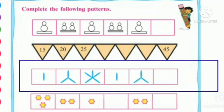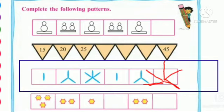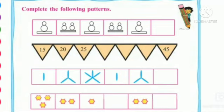In the third picture, figures show: 1, 3, 5, then 1, 3, and what will be the sixth figure? Yes, it will be 5. In the fourth picture: first box has 3 stars, second has 2 stars, third has 1 star. The next will be 3 stars, then 2, then 1. This is the correct sequence.